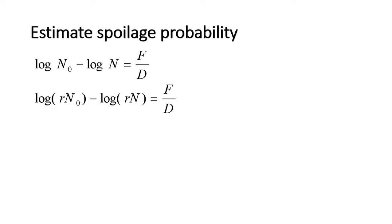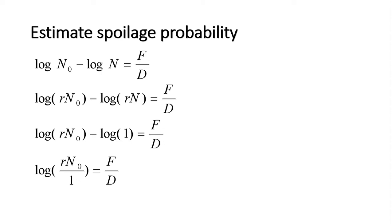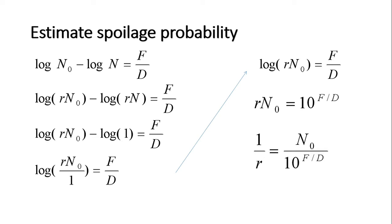To achieve the probability of only one survivor from the microbial population of all processed containers, R times N becomes 1. The equation becomes: log(R × N-note) minus log(1) equals F divided by D. Rearranging, log(R × N-note / 1) equals F/D. Since F can be expressed as multiples of D value, F/D is actually the number of log cycle reductions.